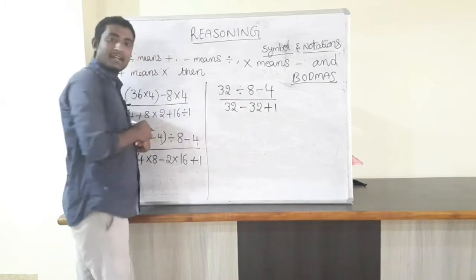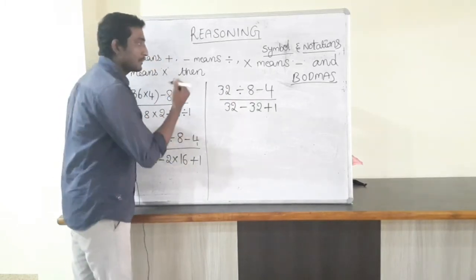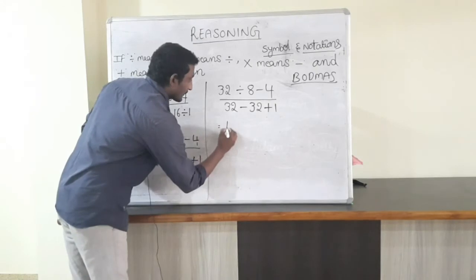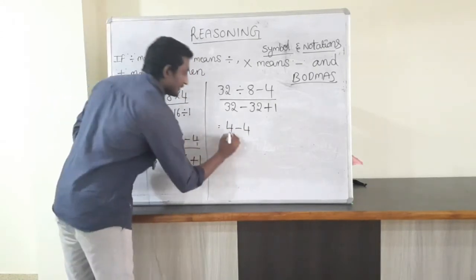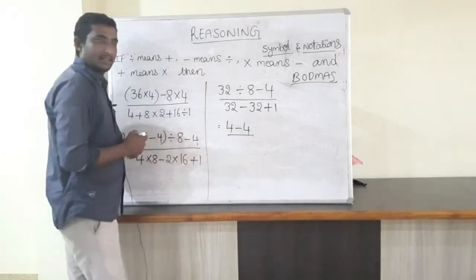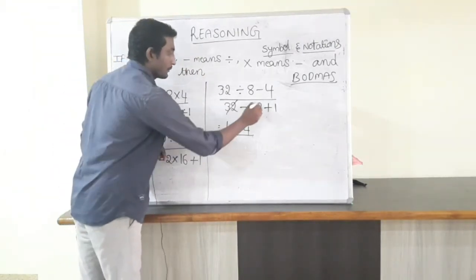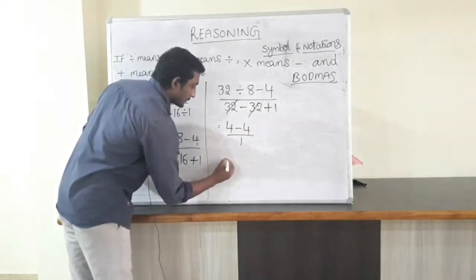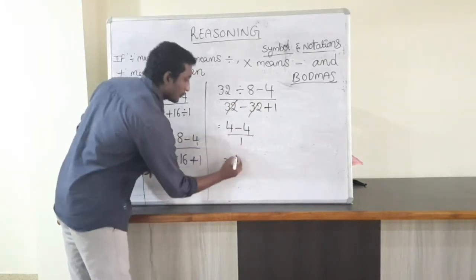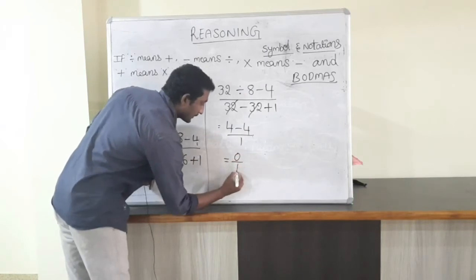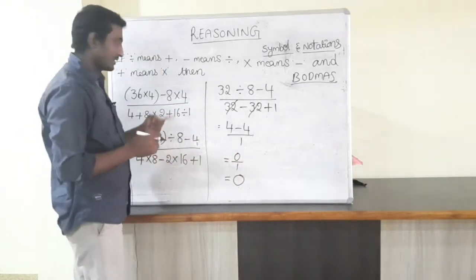32 divided by 8 — how many times? 4 times. So 4 minus 4 equals 32 minus 32 equals 0. 4 minus 4 equals 0; 0 divided by anything equals 0. So the answer is 0.